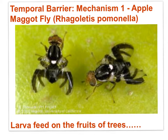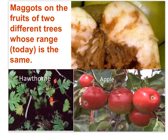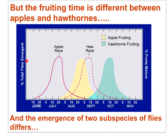Here's my first example of the temporal barrier — mechanism one — involving the apple maggot fly, Rhagoletis pomonella. These lay their eggs on fruits, and the larvae eat the fruits: apple and hawthorn. This graph shows the emergence of flies over time and also shows the timing of the fruiting of the apple and hawthorn. Apple fruits mostly from August to September, while the hawthorn fruits almost entirely in October. The difference in the timing of the two fruit species has resulted in two populations of maggot flies.